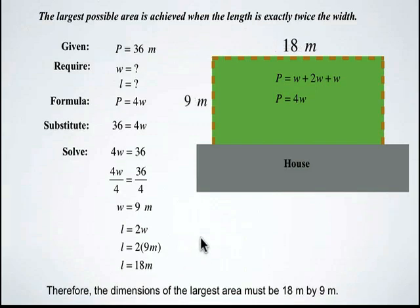Therefore, the dimensions of this play area, where the house represents one of the sides and we want to maximize it with 36 meters of fencing, has to be 18 by 9 meters.